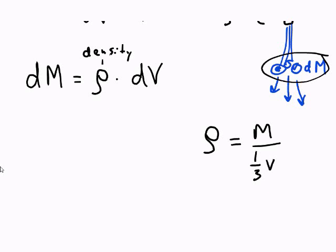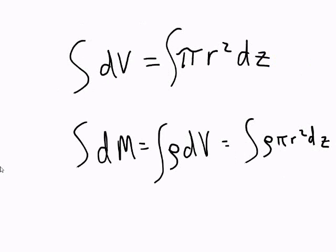We could say that the density then is 3M over V. So let's just summarize these two integrals. For volume we've got the integral over dV which is just pi r squared dz.